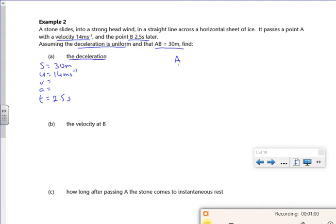And I want the deceleration, so I want the acceleration negatively. So I've got to choose an equation that doesn't have V in it, which is S equals UT plus half AT squared. You can imagine it, the wind's just slowing it down.